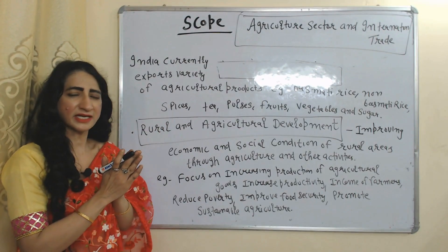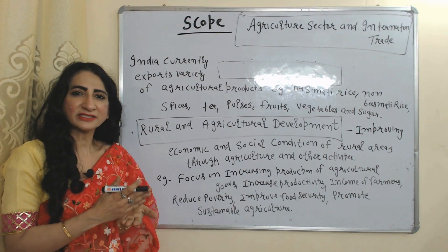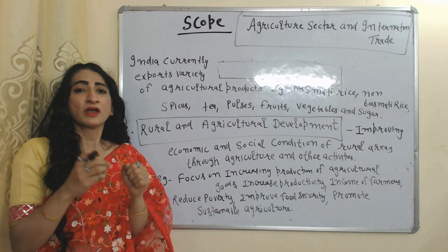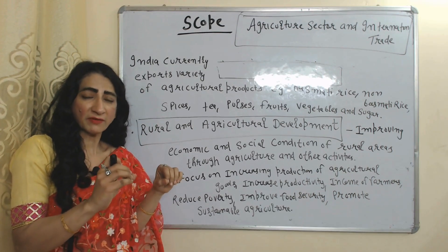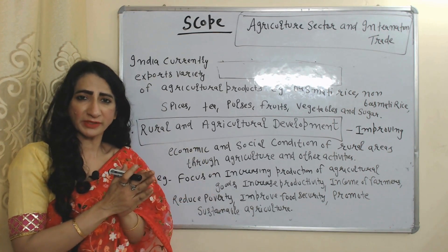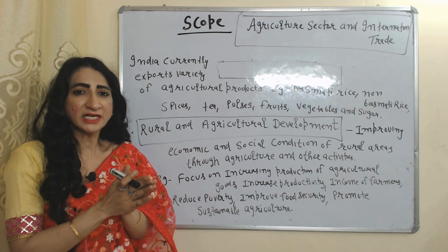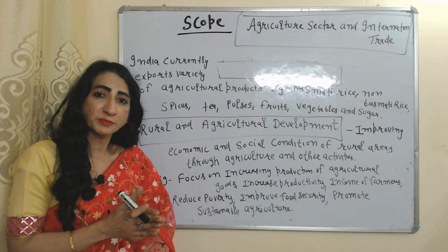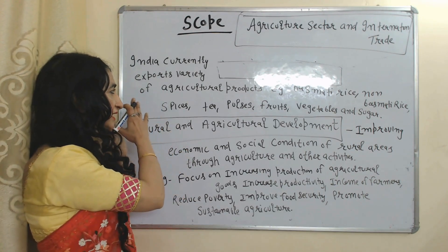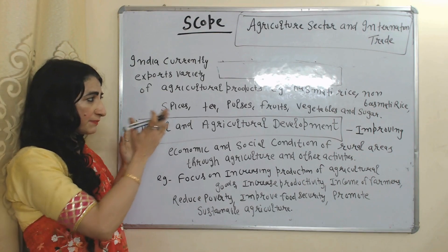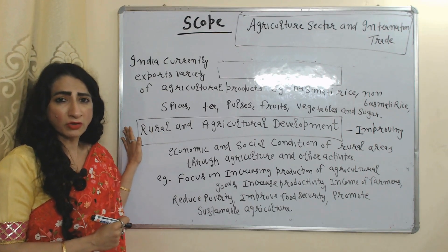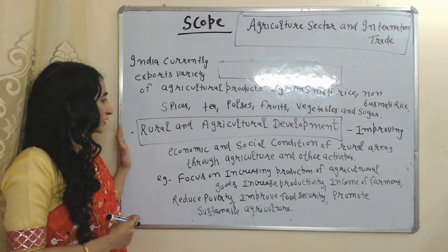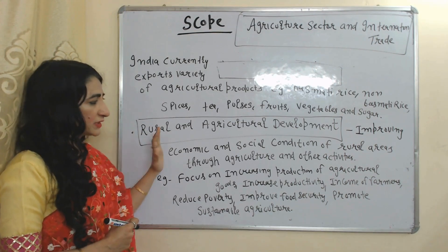The next scope is the agriculture sector and international trade. Agricultural economics suggests how we can increase our exports through the agriculture sector. For example, before the Green Revolution, India was importing wheat from other countries. But the Green Revolution was a miracle for Indian agriculture — it transformed India from a food-deficit nation to an exporter of grains. Currently India exports many agricultural products such as Basmati rice, spices, tea, pulses, fruits, vegetables, and sugar.